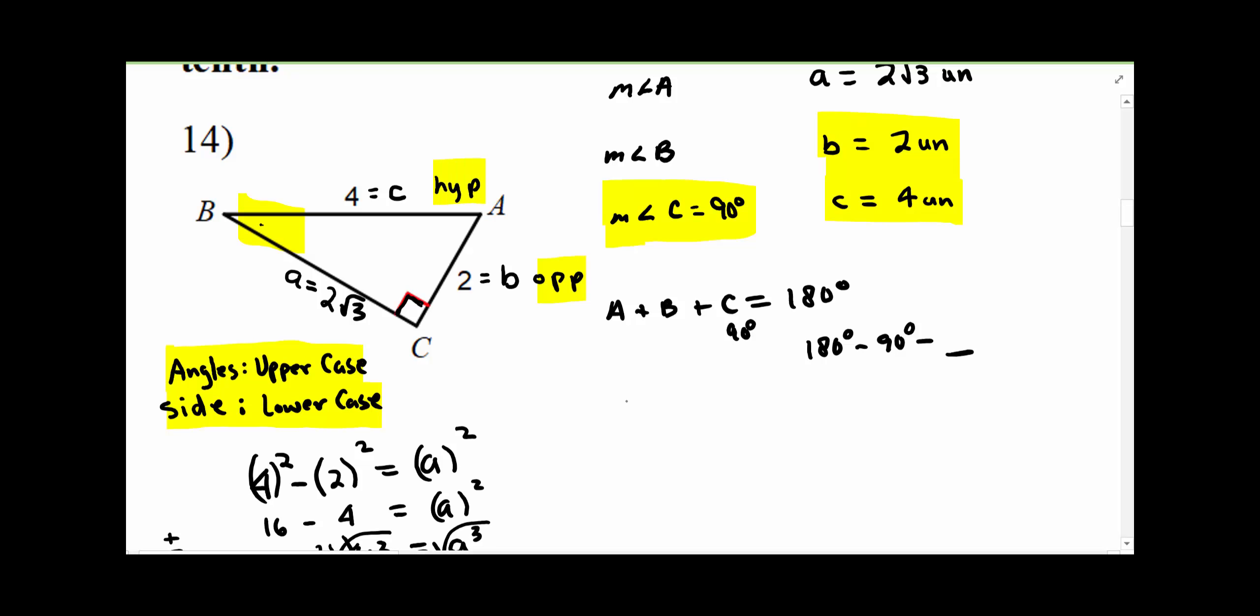So I'm going to say the sine of angle B is equal to the opposite over the hypotenuse. So sine of B is equal to 1 half.